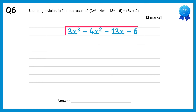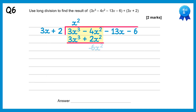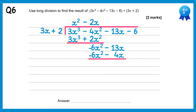We'll put the cubic inside the bus stop and the linear term outside. Do 3x cubed divided by 3x which gets you x squared. Multiply x squared back through: x squared times 3x is 3x cubed, x squared times 2 is plus 2x squared. Subtract: 3x cubes will cancel, negative 4x squared take 2x squared is negative 6x squared. Bring down the next term, negative 13x. Do negative 6x squared divided by 3x which gives negative 2x. Multiply negative 2x back through: negative 2x times 3x is negative 6x squared, negative 2x times plus 2 is negative 4x. Subtract: negative 6x squareds will cancel, negative 13x take away negative 4x is negative 9x.